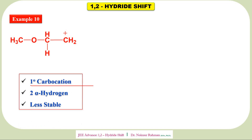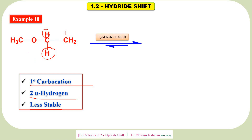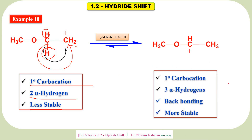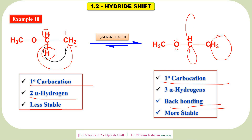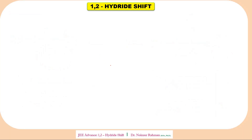Example ten: this is a primary carbocation with two alpha hydrogens — it is less stable. After hydride shift, it generates a still-primary carbocation but with three alpha hydrogens. It also has back bonding: since oxygen has two lone pairs of electrons, this lone pair can overlap with the empty p orbital of the carbocation, forming a pi bond. This is known as back bonding, and if back bonding is possible, stability increases.